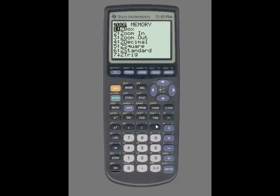Next, you're going to press zoom and then number 9 for zoom stat, and you can see the scatterplot on this screen.